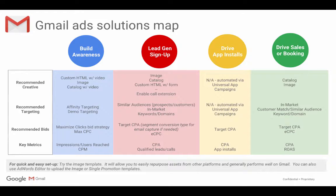If you are looking to generate leads and drive signups, you could use image, catalog, or HTML creatives — including a form that users could fill in. We also recommend you enable call extensions. Targeting here could be similar audiences for your potential customers, in-market audiences, or keywords and domains. For bidding, we recommend target CPA and enhanced CPC, and the metrics to look at would be CPA, qualified leads, and calls.